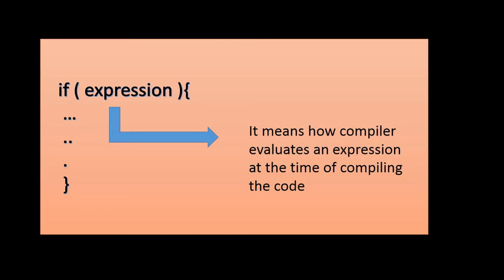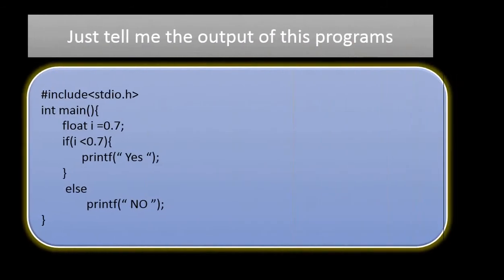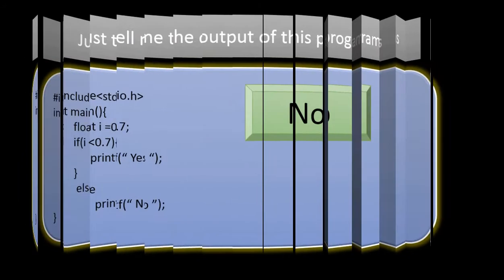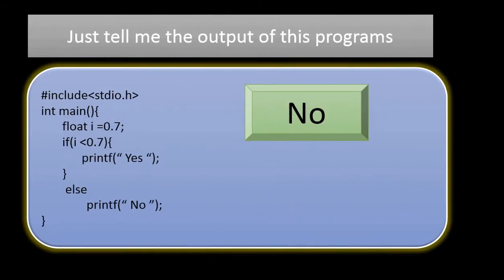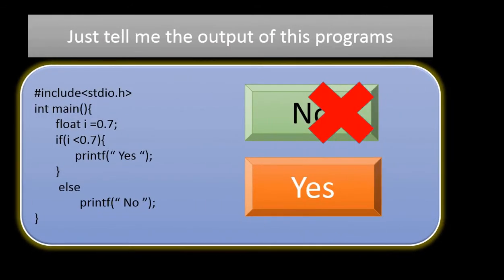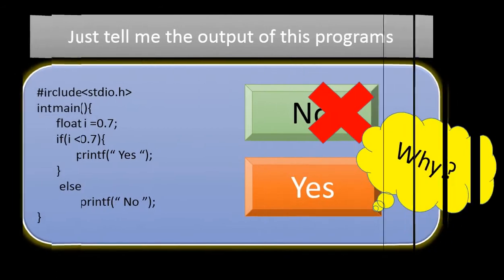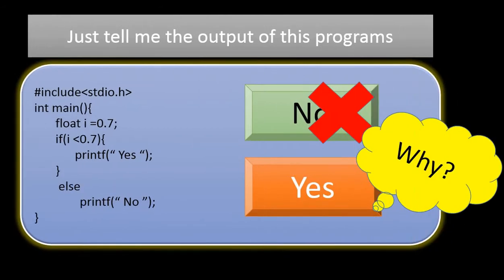Just tell me the output of this program. Maybe you think that output of this program is No, isn't it? But it is totally wrong. The output of this program is Yes. Now the question arises why and how?